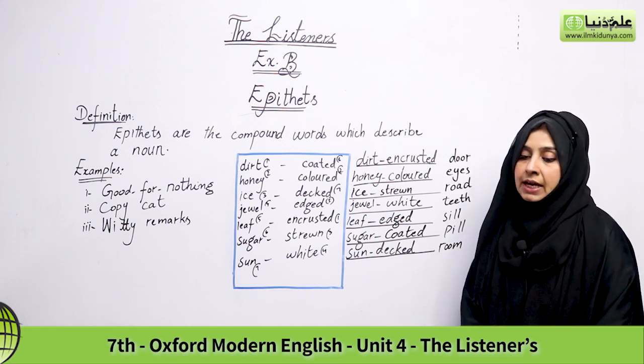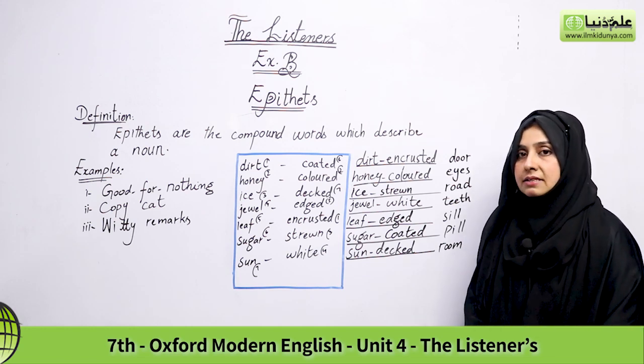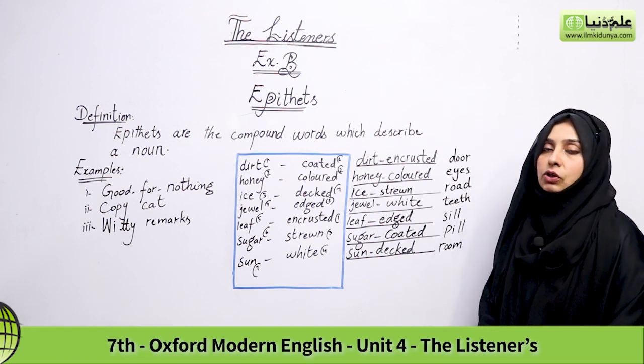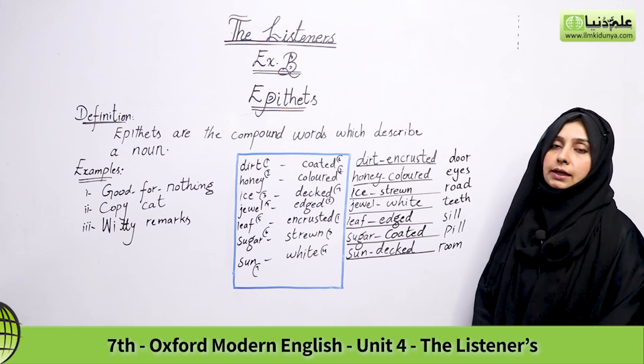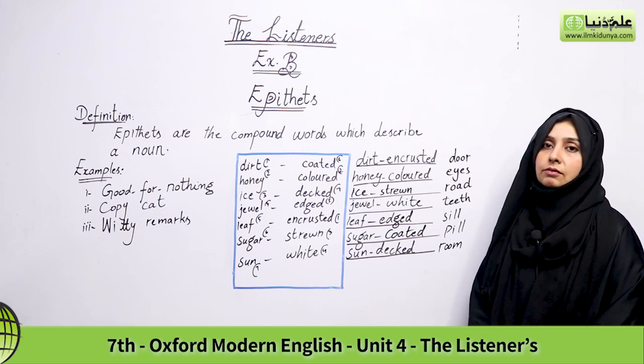Students, this is how you need to do this exercise: first match the words — dirt with encrusted, honey with colored, ice with strewn, jewel with white, leaf with edged, sugar with coated, sun with decked — then form the compound hyphenated word with the adjective, and then add the additional noun to describe it. The remaining exercises I will explain in the next video. Allah Hafiz.